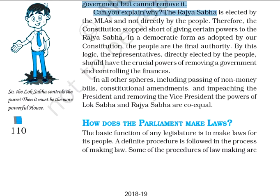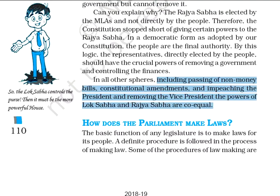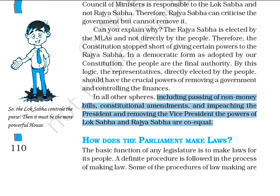The special functions where both houses are co-equal include the passing of money bills, passing constitutional amendments, impeachment of the President, and removal of the Vice President. In these situations, the powers of Lok Sabha and Rajya Sabha are co-equal. Rajya Sabha also holds an important position in the legislature of India.